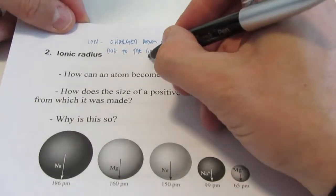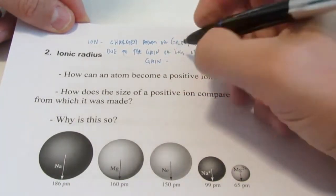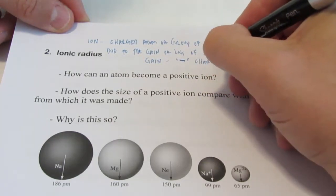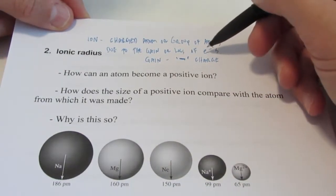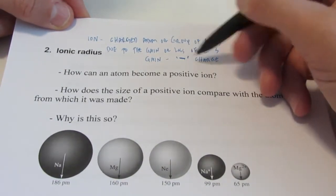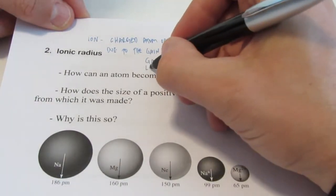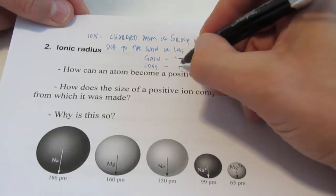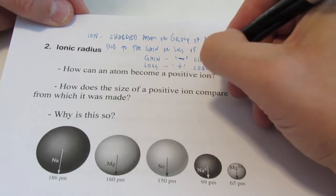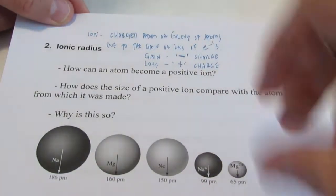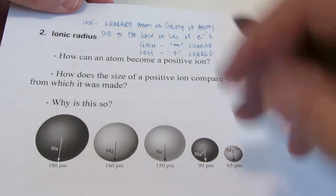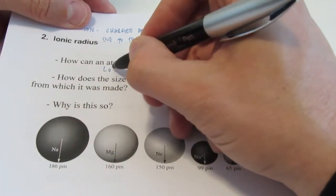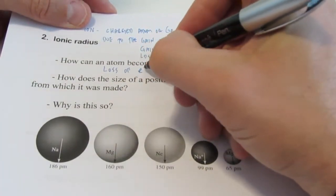If you gain electrons, you end up with a negative charge. If you're neutral and someone starts throwing negative electrons on you, you're going to become more and more negative. If there's a loss of electrons — you're neutral and somebody's taking negative electrons away from you — you gain a positive charge. So my first question is: how can an atom become a positive ion? It's through the loss of electrons.